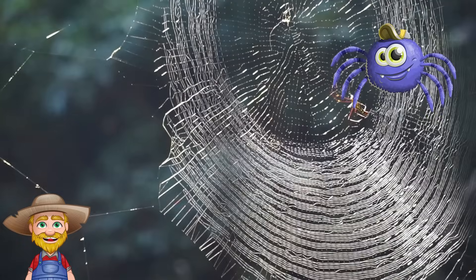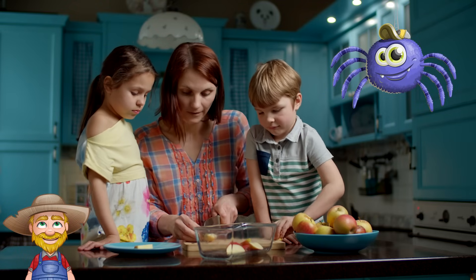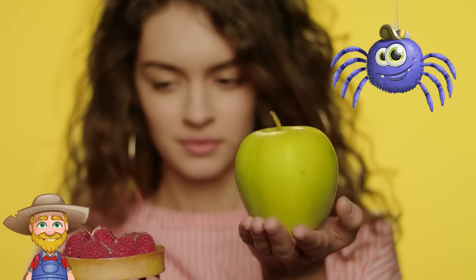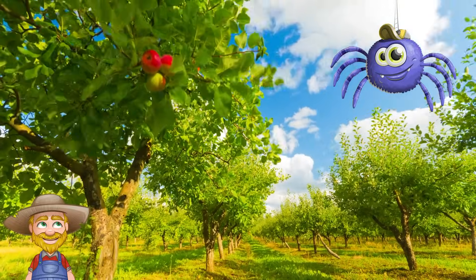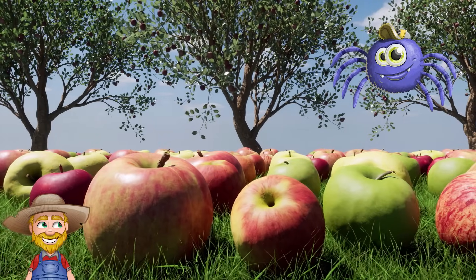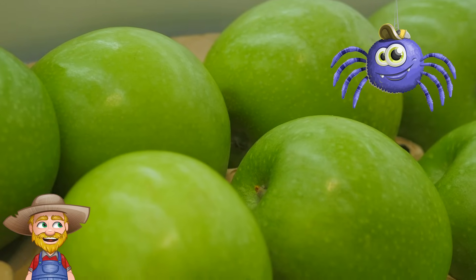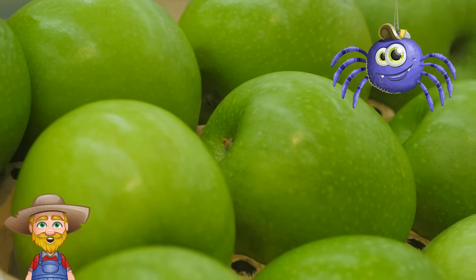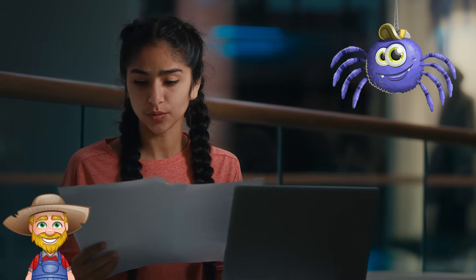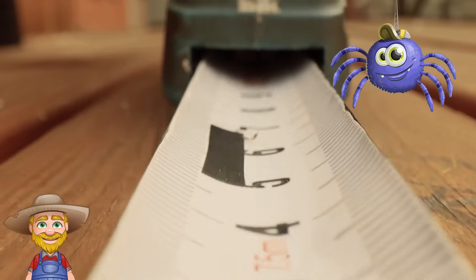That is a great example, Aldo. This brings us back to opportunity cost. Opportunity cost is the value of the next best option that you give up when you make a choice. For example, if I choose to water this tree that produces red apples, I have to give up watering another tree that produces green apples. The opportunity cost of watering the red apple tree is the amount of green apples that I could have grown instead. To make the best choice, I have to compare the costs and benefits of each option and choose the one that gives me the most net benefit. Net benefit is the difference between the benefit and the cost of an option.